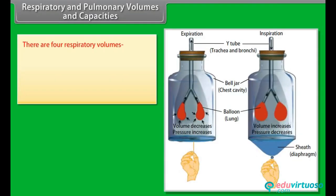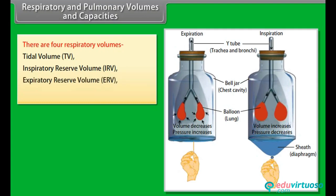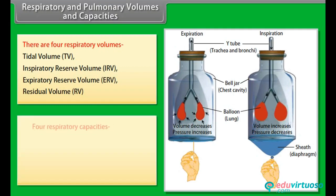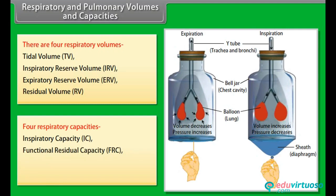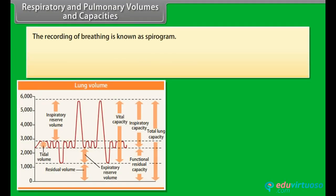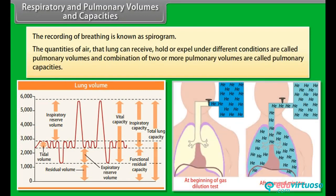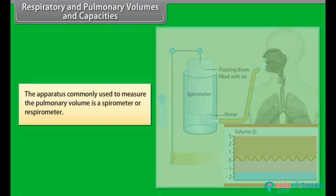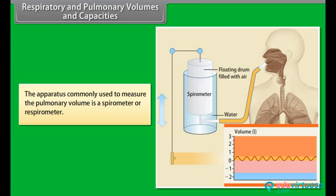Respiratory and pulmonary volumes and capacities: There are four respiratory volumes — Tidal Volume (TV), Inspiratory Reserve Volume (IRV), Expiratory Reserve Volume (ERV), and Residual Volume (RV) — and four respiratory capacities: Inspiratory Capacity (IC), Functional Residual Capacity (FRC), Vital Capacity (VC), and Total Lung Capacity (TLC). The recording of breathing is known as a spirogram. Combinations of two or more pulmonary volumes are called pulmonary capacities. The apparatus used to measure pulmonary volume is a spirometer or respirometer.